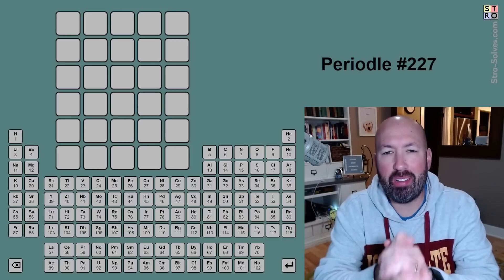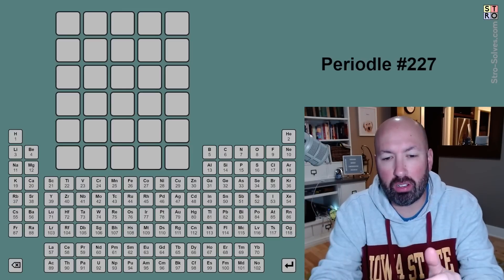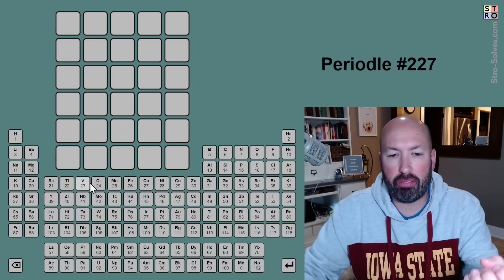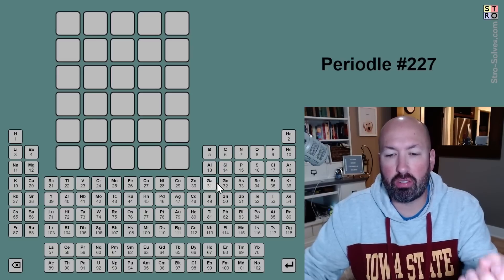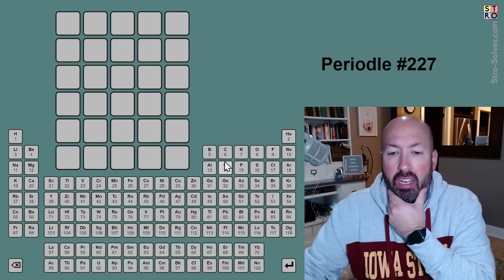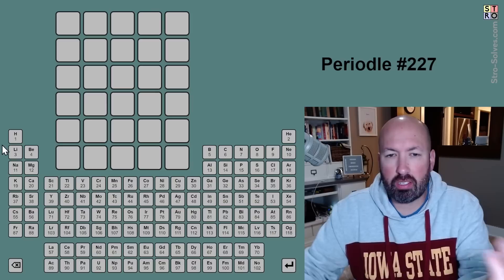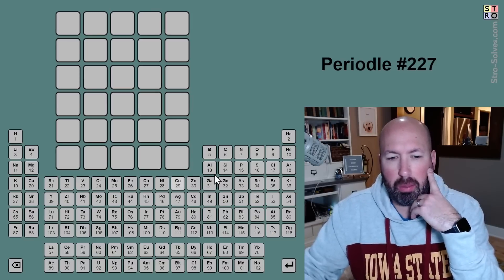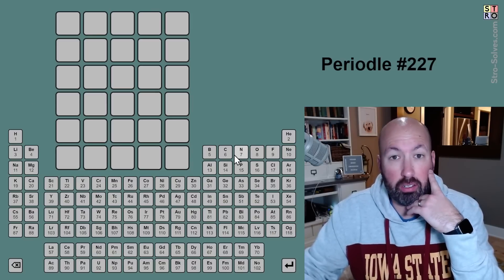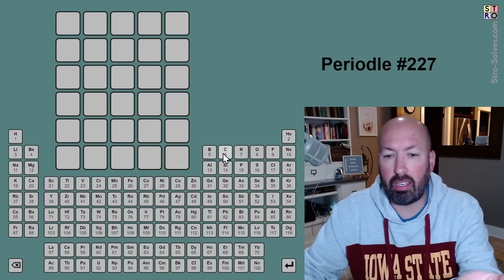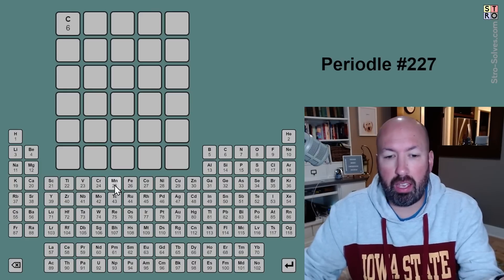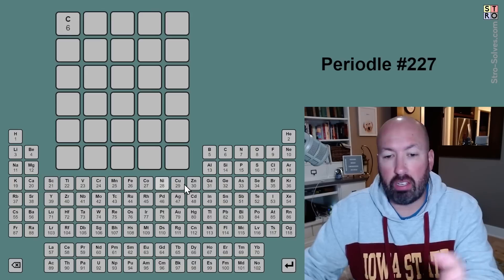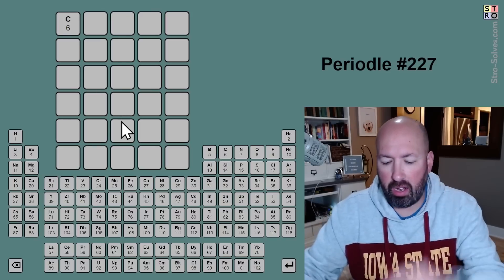Alright, I am looking at another Periodle today. This is like Wordle, but all of your guesses have to be made up of abbreviations from the periodic table. Now, from previous attempts at this puzzle, I've learned that I think the best approach is to guess single letters at first, because if you guess a C and it's gray, it will eliminate all the potential abbreviations that contain a C.